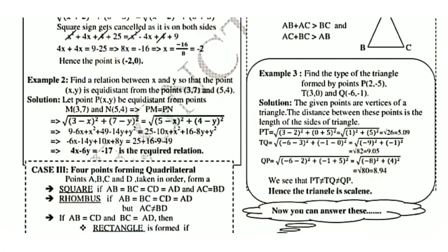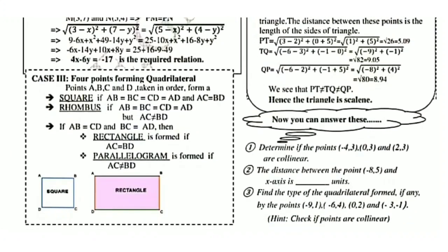Case 3: Four points forming a quadrilateral. Given four points A, B, C, D, we determine the type of quadrilateral. For a square: all sides equal and both diagonals equal. For a rhombus: all sides equal but diagonals of different measure. For a rectangle: opposite sides equal and both diagonals equal. For a parallelogram: opposite sides equal but diagonals of different measure.